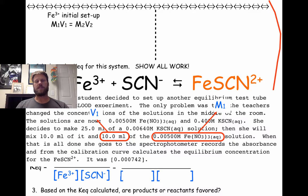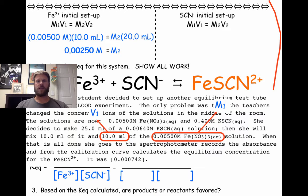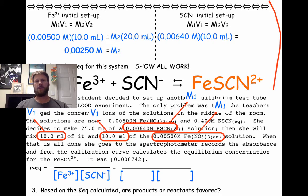We're going to mix this with 10 milliliters of the KSCN solution, so the final volume V2 will be 20 milliliters. When we solve for M2, we get 0.00250 molar. We repeat this process to find the initial concentration of SCN minus. We start with a 0.00640 molar solution and take 10 milliliters of that. Since we add that to 10 milliliters of the iron nitrate solution, V2 is 20 milliliters, and when we solve for M2, we get 0.00320 molar SCN minus.